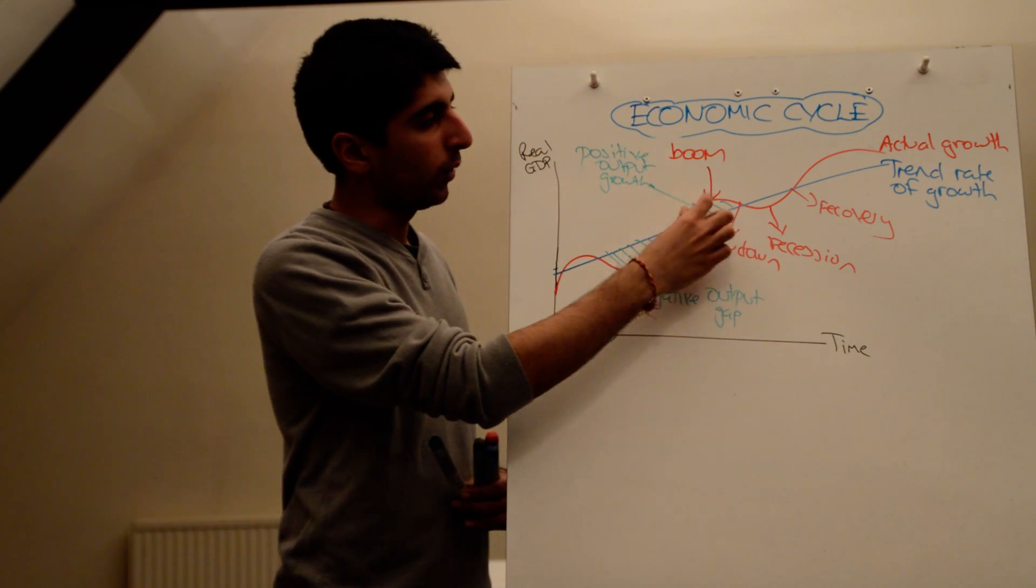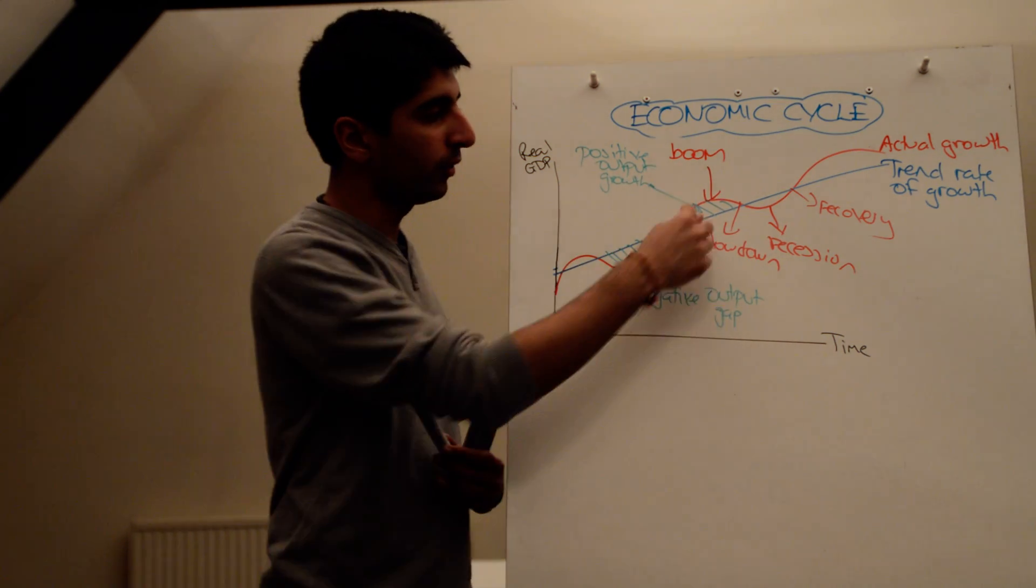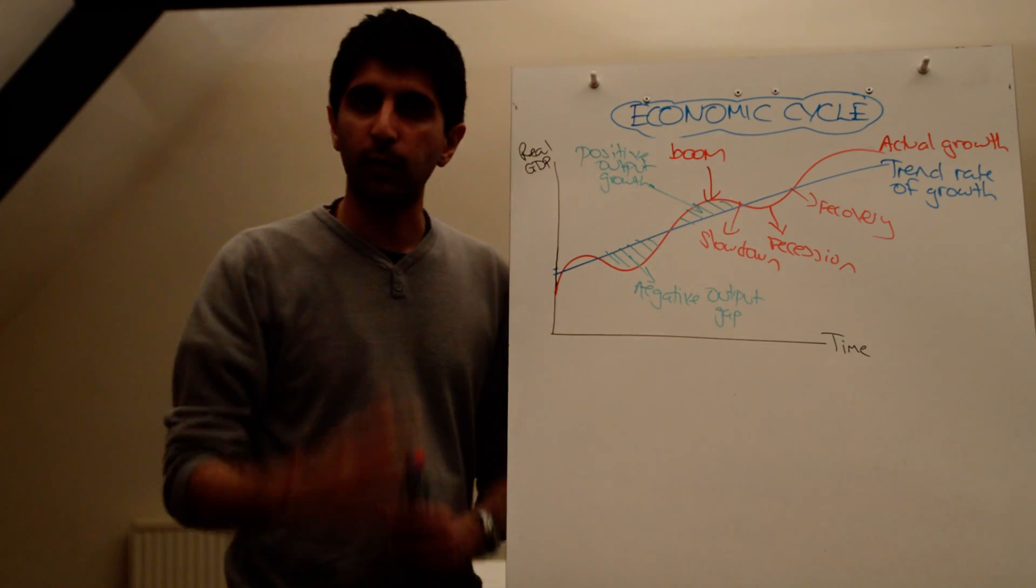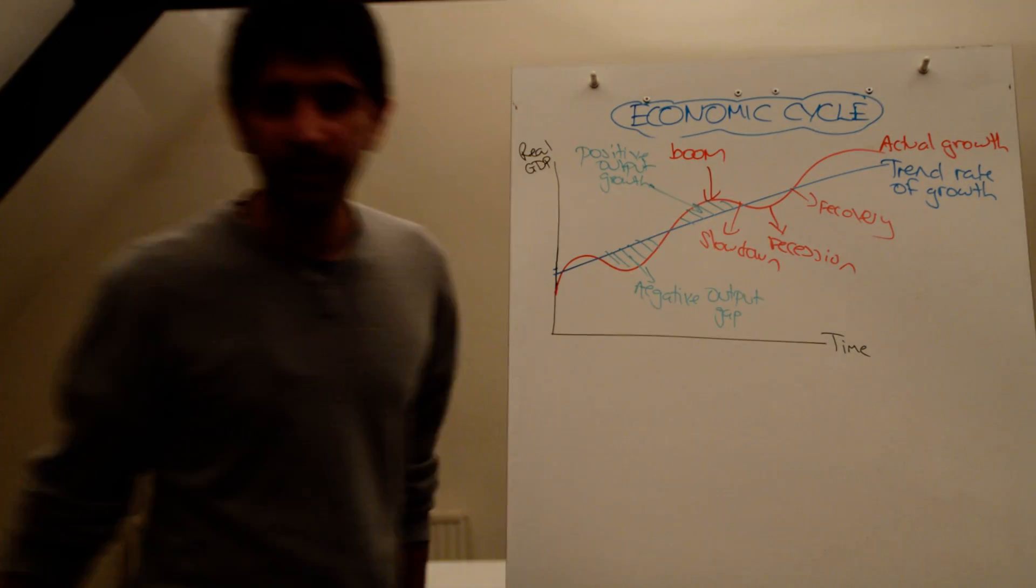When that occurs, when actual growth is more than potential growth, more than trend rate of growth, you have a positive output gap. So there are two other fundamental things to take away from this. That's the economic cycle done. See you next time. Thank you.